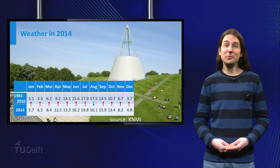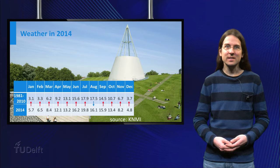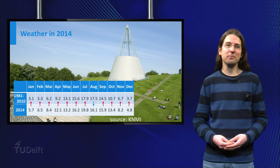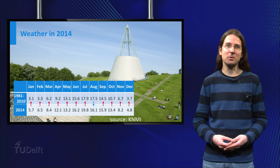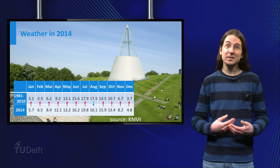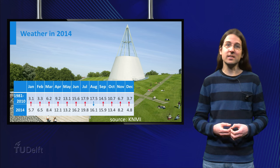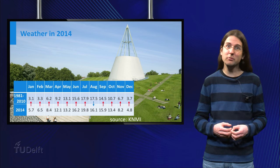Welcome! In 2014, 11 out of 12 months in the Netherlands were warmer than the average from 1981 to 2010. Could this have happened by coincidence? Or does this mean that the climate in the Netherlands has become warmer?